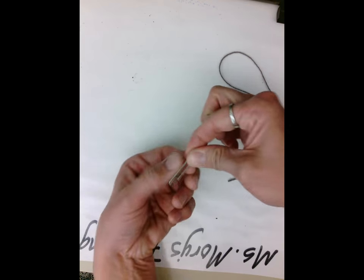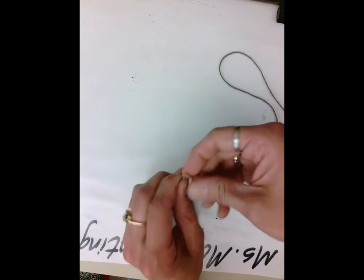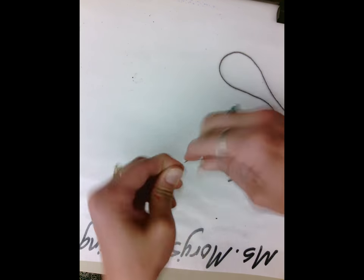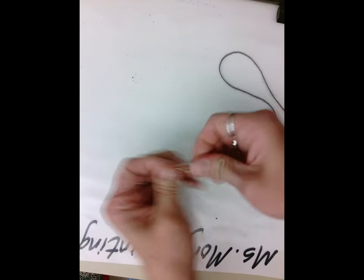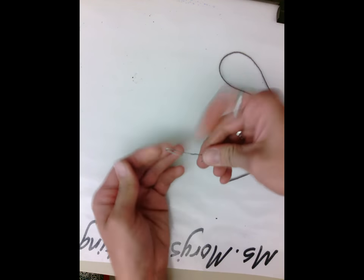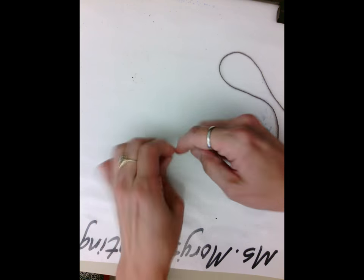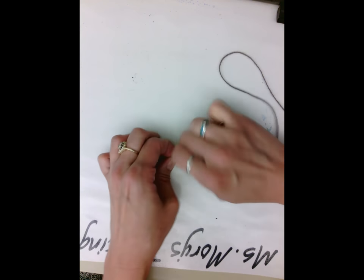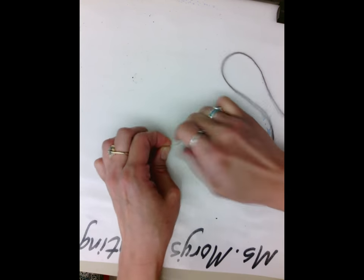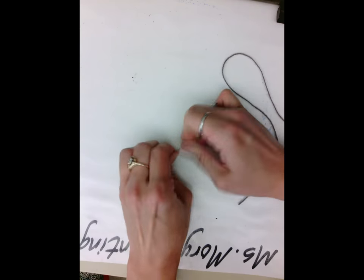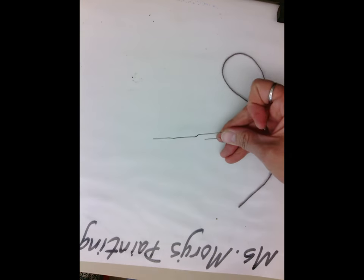You're going to take your paper clip and stretch it out so that it's all in one straight line. You're going to take this part here and stretch it out, and press and keep this so that it is a straight line like this.